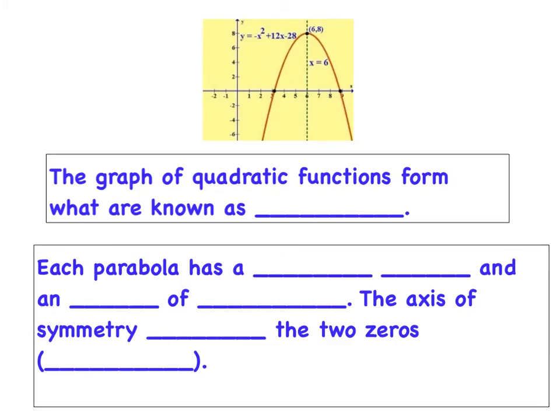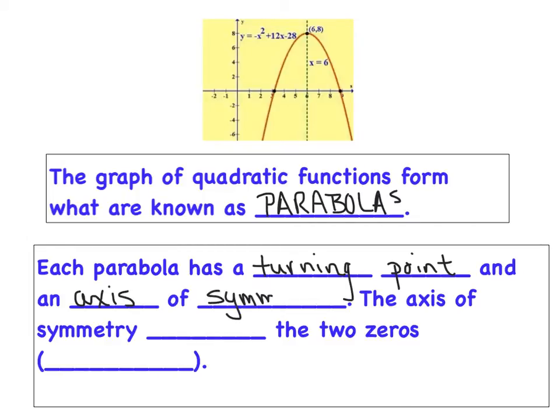The graph of quadratic functions form what is known as parabolas. Certainly they look like rainbows when they open down like this one does. So we're saying that this parabola opens down and it has a relative max sitting up there at the top. Each parabola has a turning point, and that turning point is either going to be a relative max like the one in this picture is, or if we flip that parabola upside down, then it would be a relative min. Each parabola also has an axis of symmetry, which this picture also displays. Our axis of symmetry is this dotted line that kind of bisects the parabola, splits it in half, and it passes right through the turning point. Sometimes we also call that turning point its vertex.